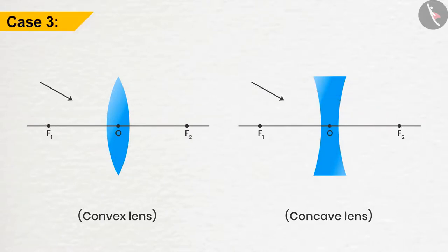In case 3, if the ray of light passes through the optical center, then after refraction they will emerge without any deviation.